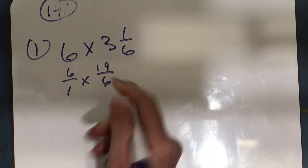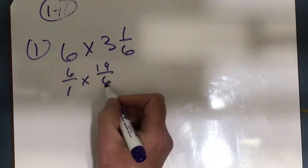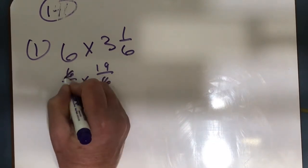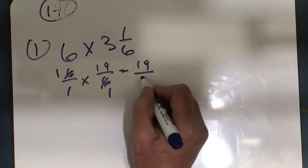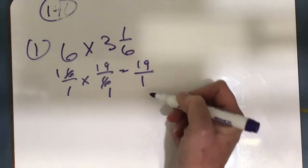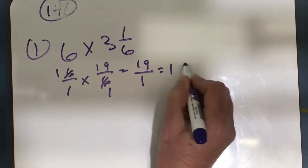And I'm going to simplify. 6 divided by 6 is 1, and 6 divided by 6 is 1. So I multiply: 1 times 19 is 19, and 1 times 1 is 1. I do not want to leave an improper fraction, so 19 over 1 equals 19.